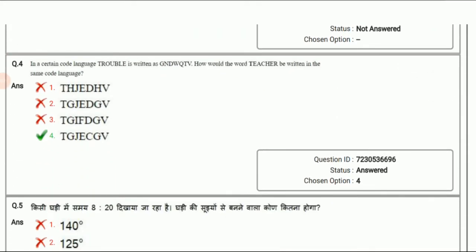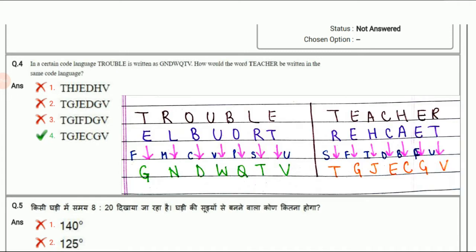Next question: In a certain code language, TROUBLE is written as GNDWQTV. How would the word TEACHER be written in the same code language? First let's understand the relationship between TROUBLE and the code. If I write TROUBLE and then in reverse order: E L B U O R T. Now E leaving F we get G, L leaving M we get N, B leaving C we get D, U leaving V we get W, O skip P then Q, R leaving S we get T, and T leaving U we get V. This is the relationship between the word and the code.